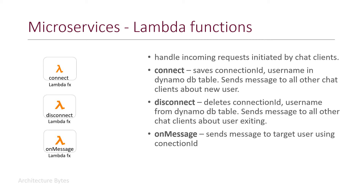Similarly, in the case of disconnect, this function deletes the connection ID and username from the DynamoDB table and sends a message to all other chat clients about this user no longer being available. The on-message Lambda function is used to send messages to other chat clients. If a user is sending a message to another user, this is the Lambda function that gets invoked. It's important to know that the connection ID of the target chat client should be known to the server to successfully send a message from server to client.